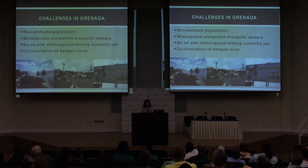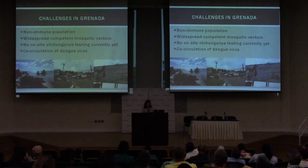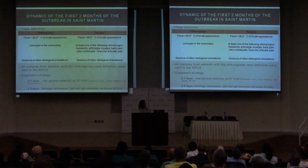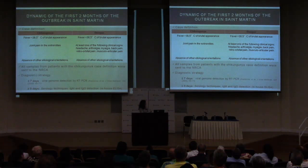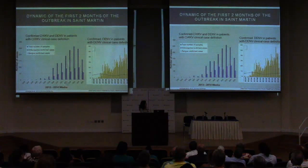Particular challenges for Grenada with chikungunya: first, this was a non-immune population — no one had ever seen chikungunya before, so when the virus hit, most people got infected. There are widespread competent mosquito vectors — both Aedes aegypti and Aedes albopictus. Right now we don't have on-site chikungunya and dengue testing. A study was done to see if clinical case definitions could be used to diagnose these infections simultaneously during an outbreak, using standard PCR testing and serology.